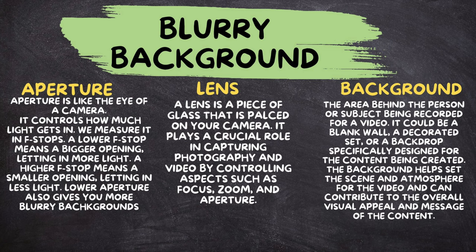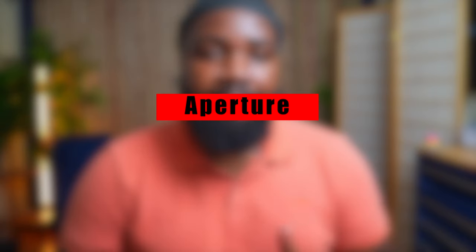So there are three things you have to focus on in order to get a blurry background. Number one, we need to focus on the aperture of the lens. Number two, we need to focus on the lens itself. And number three, the background. The background is really important. All right, let's start off with the aperture.